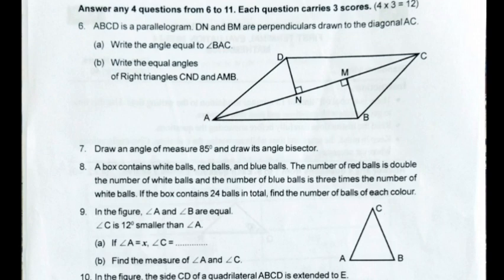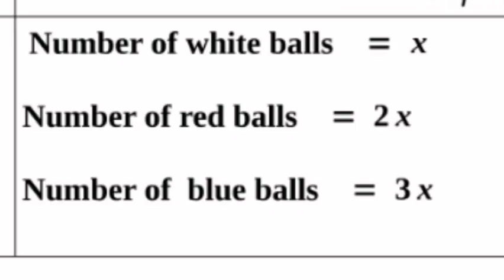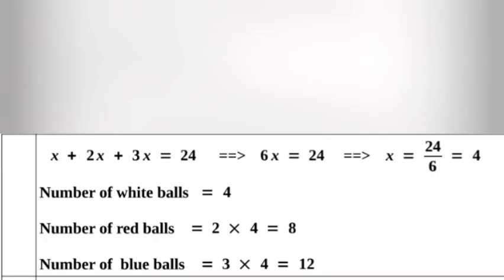Question 8. A box contains white balls, red balls, and blue balls. The number of red balls is double the number of white balls, and the number of blue balls is three times the number of white balls. If the box contains 24 balls in total, find the number of balls of each color. Answer: Let white balls equal x, red balls equal 2x, blue balls equal 3x. x plus 2x plus 3x equals 24. 6x equals 24, implies x equals 4. White balls: 4, red balls: 8, blue balls: 12.